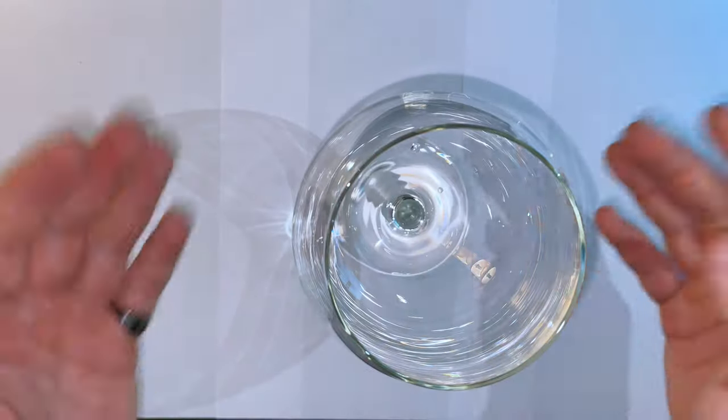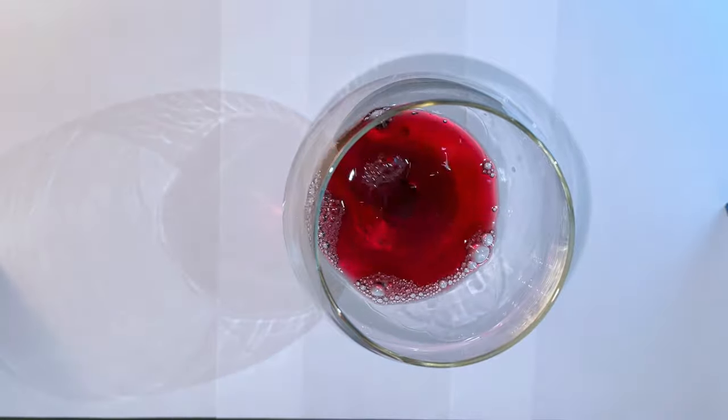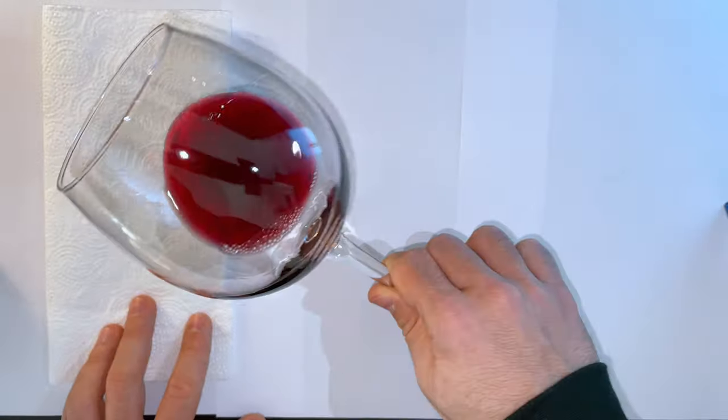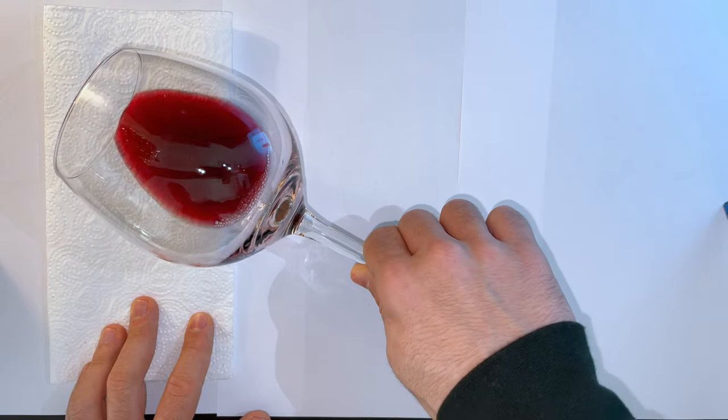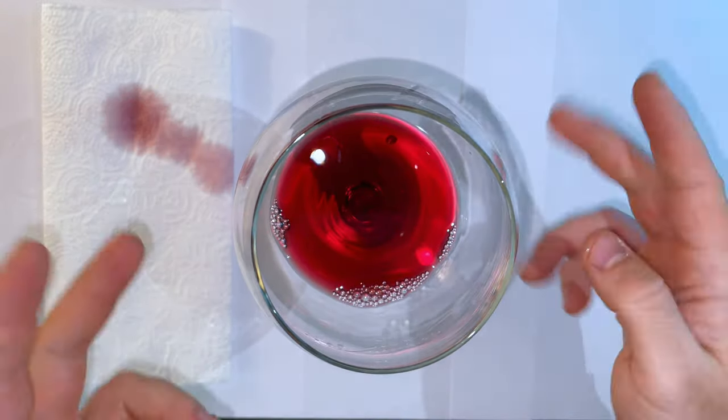But let's also test it, not just talk about it. Here we have some red wine, as you can see, pretty bright red. Let's save the color hue for reference here, just with a drop. And now let's add some sodium bicarbonate.